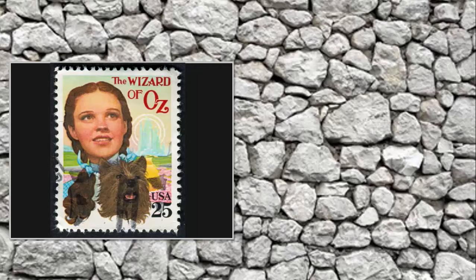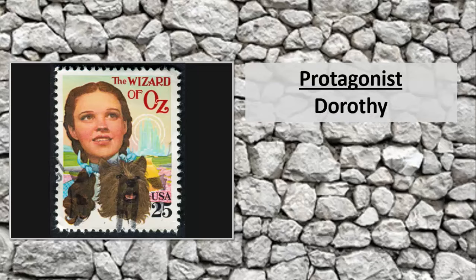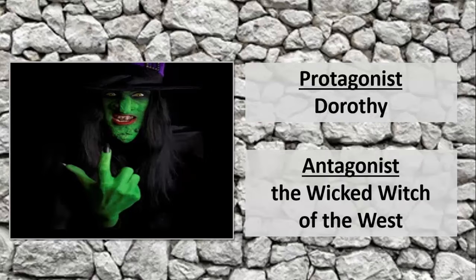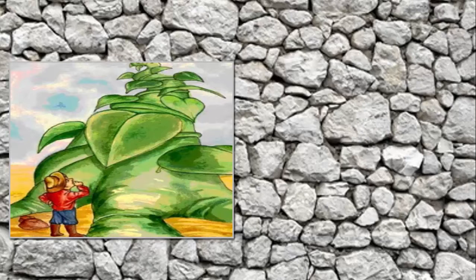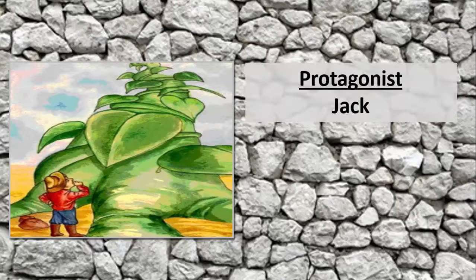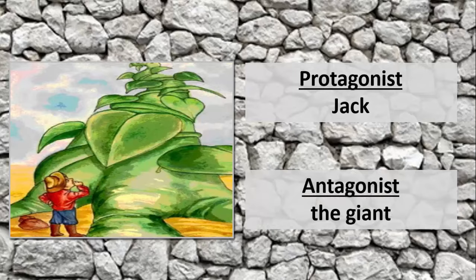In the Wizard of Oz, the Wicked Witch of the West is constantly causing conflict for the main character Dorothy. Dorothy is the protagonist of the tale and the witch is the antagonist. In Jack and the Beanstalk, a young boy named Jack climbs a magic beanstalk into the sky and meets an angry giant. Jack is the protagonist while the giant is the antagonist.